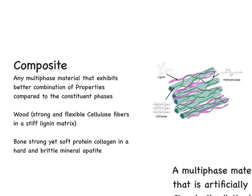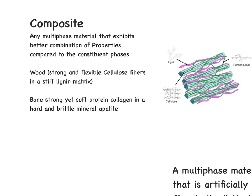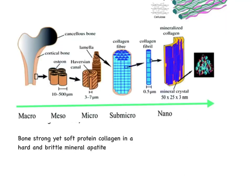Moving to the next example of a natural composite, it's human bone. Human bone consists of two main components: a soft protein collagen and a very hard and brittle mineral called apatite. The strong yet soft collagen fibers are held together with the hard and brittle mineral apatite. These are a few examples of natural composites.